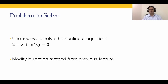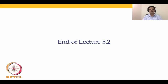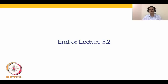To recap this lecture: we did two things. First, we used fzero to solve the nonlinear equation 2 - x + ln(x). Second, we improved our bisection rule by replacing hard-coded f(x) with a function call to fun_for_bisect, and added a stopping criterion based on error tolerance. In the next lecture we will cover fixed point iteration, which is an open method rather than a bracketing method. Thank you.